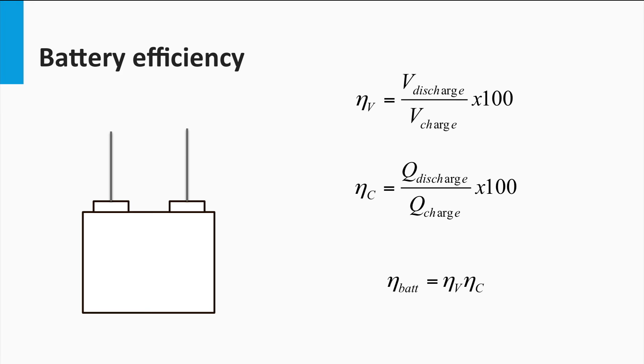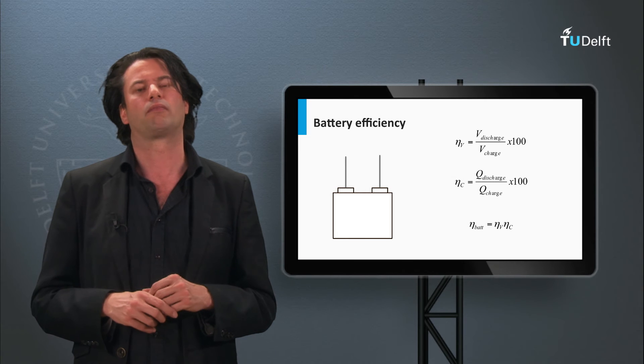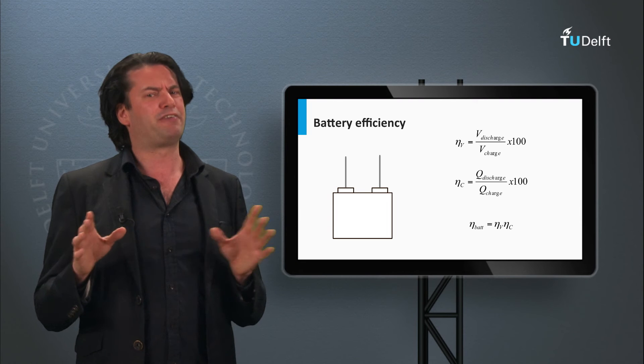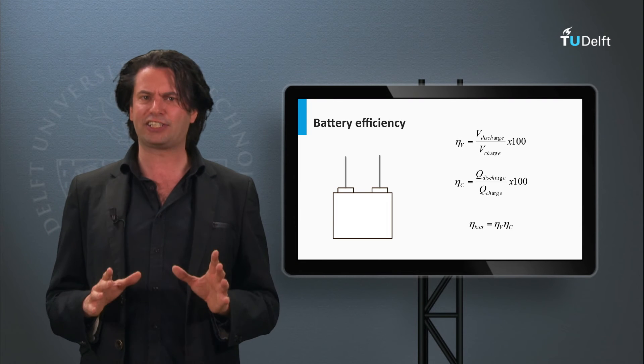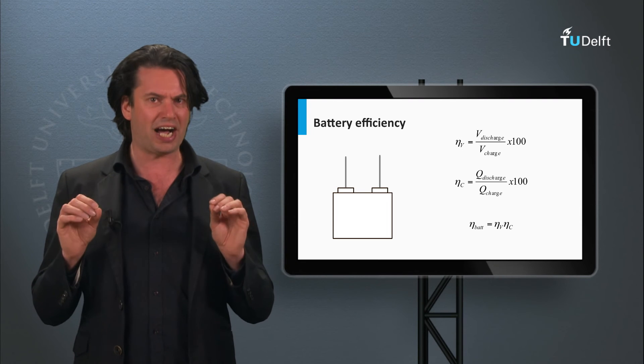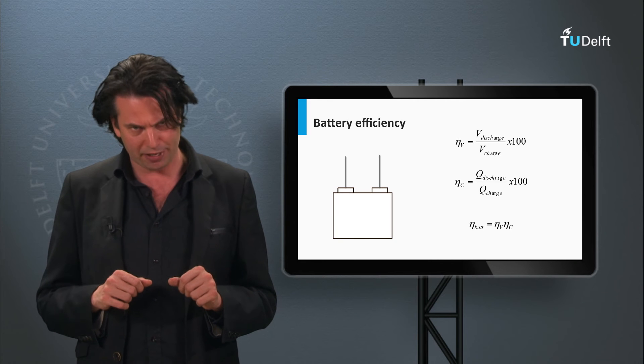This overall battery efficiency can be seen as the round-trip storage efficiency that is usually considered while comparing different storage devices. This battery efficiency includes the effects of all the chemical and electrical non-idealities occurring in the battery.